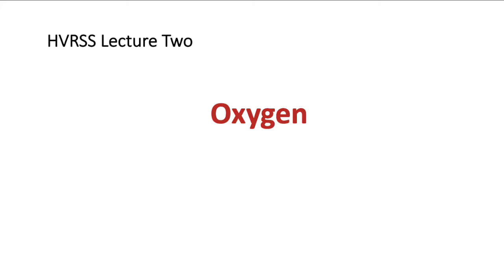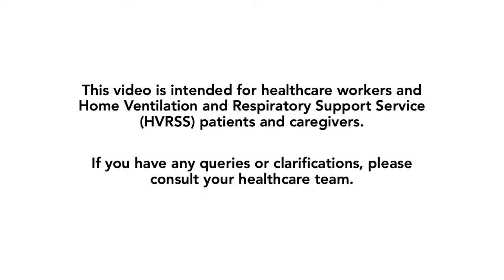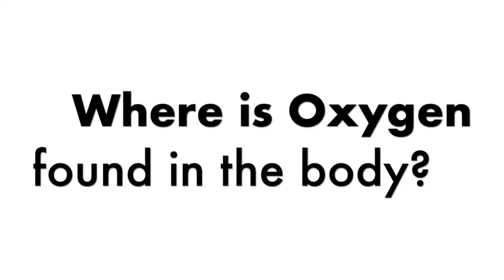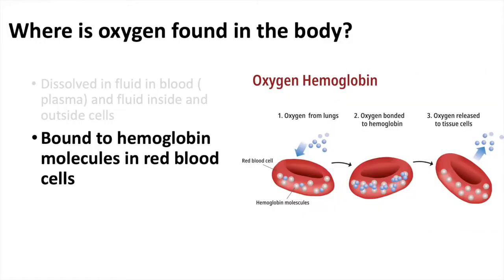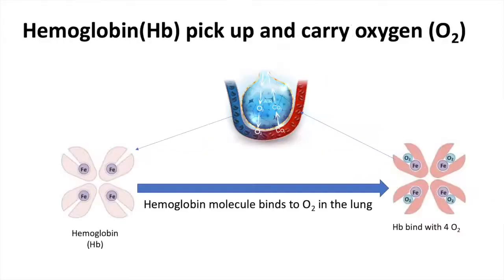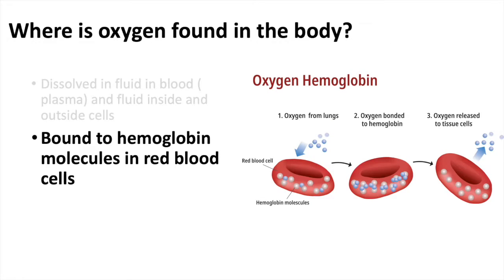Lecture 2 is talking about oxygen. Where is oxygen found in the body? Oxygen is found all over the body, dissolved in fluid in the blood, as well as fluid in and outside the cells. However, within blood, oxygen is mainly carried by hemoglobin molecules in the red blood cells.